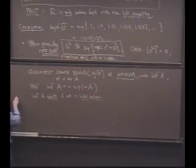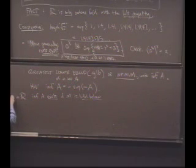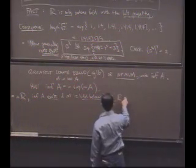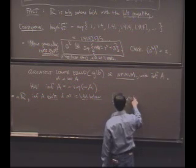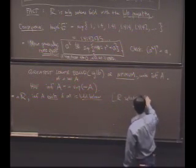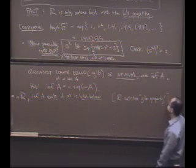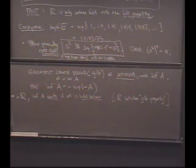So, now this is not true in Q, but it's true in R. So it's basically the corresponding property. Instead of the least upper bound property, R also satisfies the greatest lower bound property. For the same reason. And you can guess what the greatest lower bound property is. It just says, if it's bounded below, it has a least, a greatest lower bound. Okay.